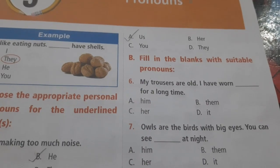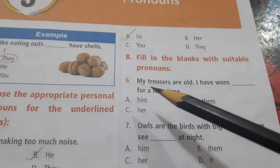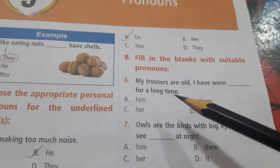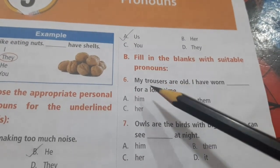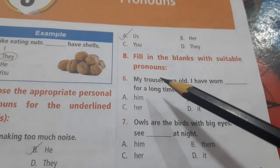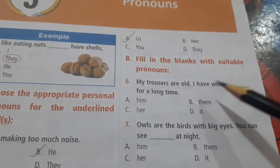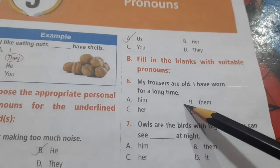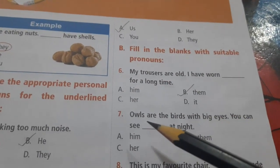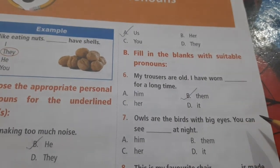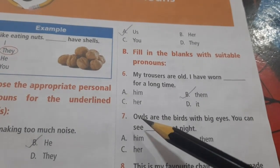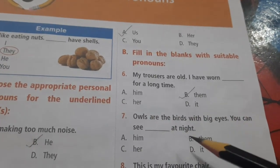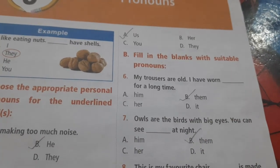Section B: Fill in the blanks with suitable pronouns. 'My trousers are old. I have worn ___ for a long time.' We are talking about trousers which is plural, not singular. I have worn them for a long time. That is why you will use 'them' because it is plural. 'Owls are the birds with big eyes.' You can see again we are talking about more than one owl, so you can see them at night, which is option B.